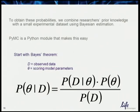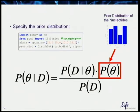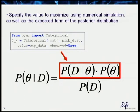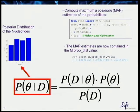To obtain these probabilities, I combined my prior knowledge about this domain with a small example dataset using Bayesian estimation — and PyMC makes this really easy. With four lines of code, I specify the prior knowledge based on my domain expertise. I then added seven experimental data points as a NumPy array, connected the data with the prior distribution, and specified that the posterior distribution I want is categorical. Out comes the posterior distribution mixing my prior knowledge with the experimental data, giving a new probability vector — all in a very small amount of code.